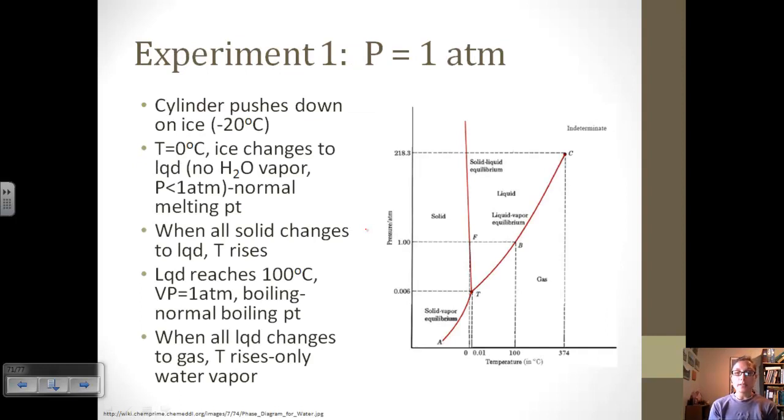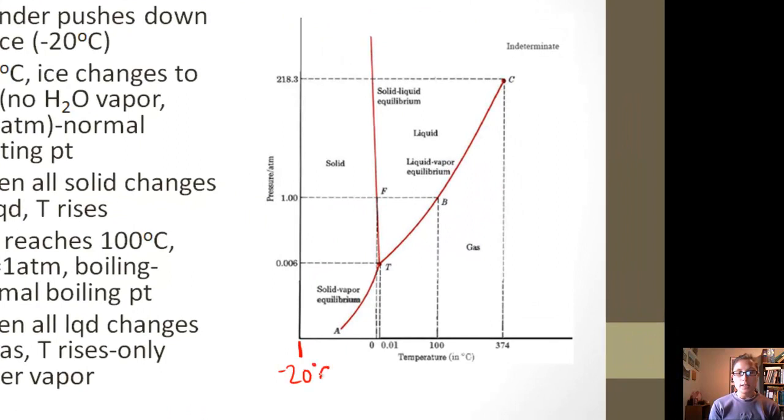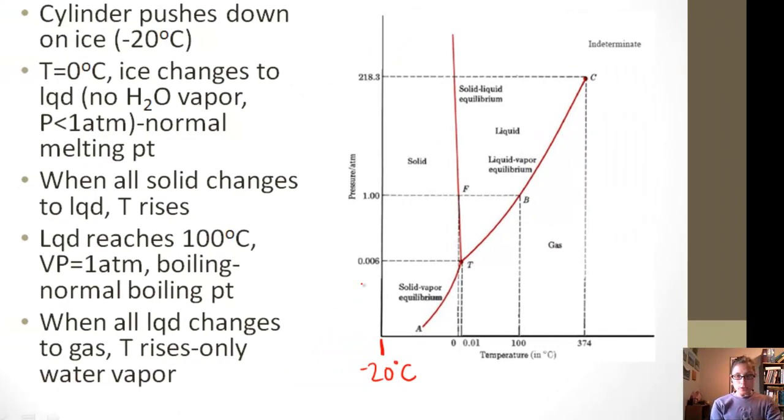We're going to look at four different experiments with the phase diagram for water to look at some different parts. The first experiment is if we have a pressure of one atmosphere. Let's say we have ice in a cylinder, a closed system, and at one atmosphere our temperature is negative 20 degrees Celsius. We're going to apply some pressure.